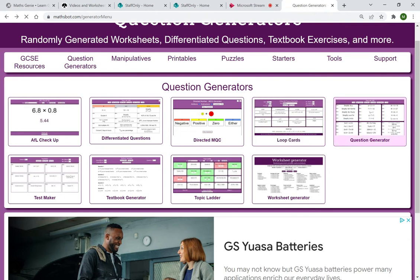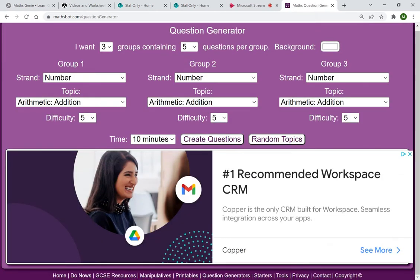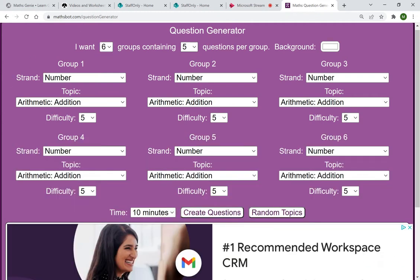The next one I use, I use the question generator. Very similar to differentiated questions, but you can add some groups in. So I'll have six groups containing three questions per group. Let's make the background. You change the background, make it pretty. I'm not going to do that. But this is very, very useful for if you've perhaps done a mock exam and you've got some topics that you want to go over.